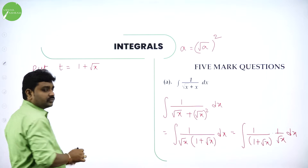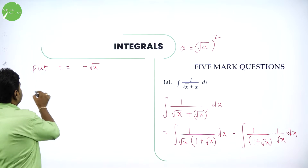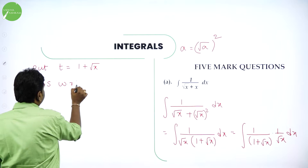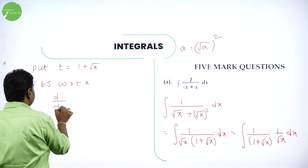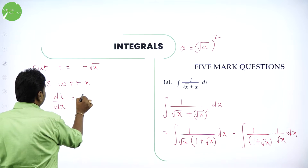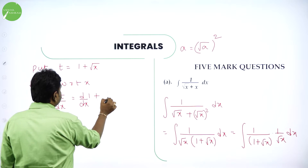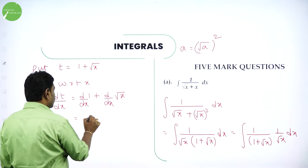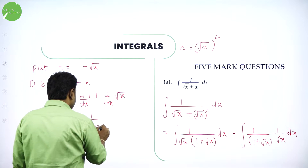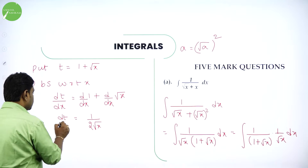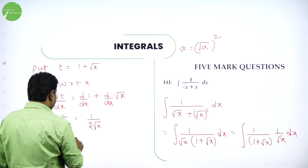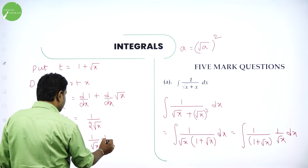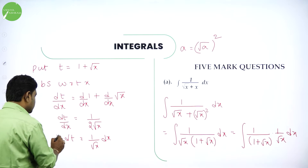So, all of you know differentiation. Differentiate both sides with respect to x. You will get d by dx of t equal to d by dx of 1 plus d by dx of root x. Derivative of 1 is 0. Derivative of root x is 1 by 2 root x. This is dt by dx. And we need just 1 by root x dx. So, dt becomes 1 by 2 root x into dx, transfer that side, it will become 2 dt.